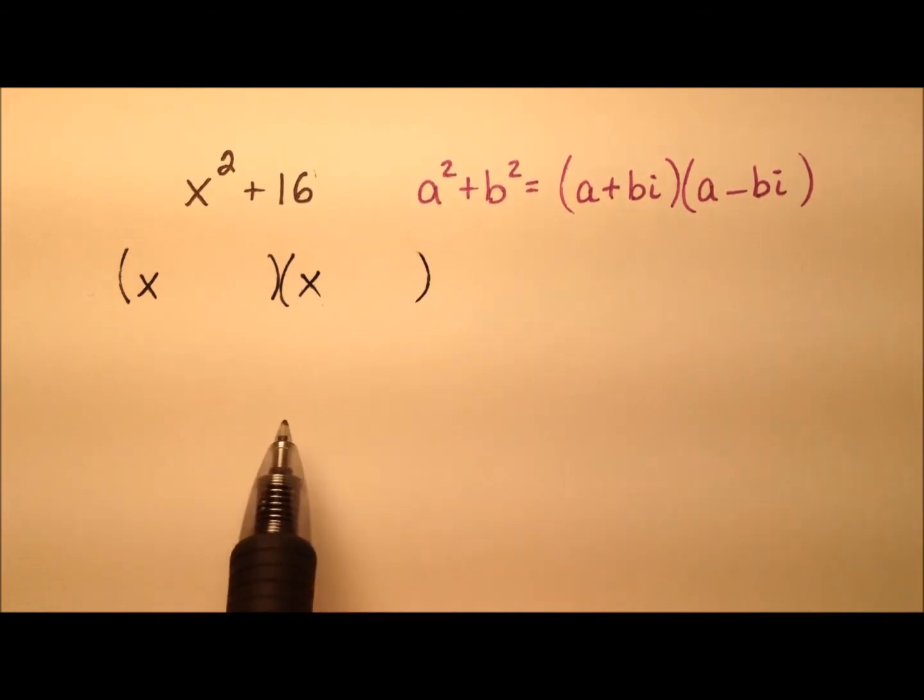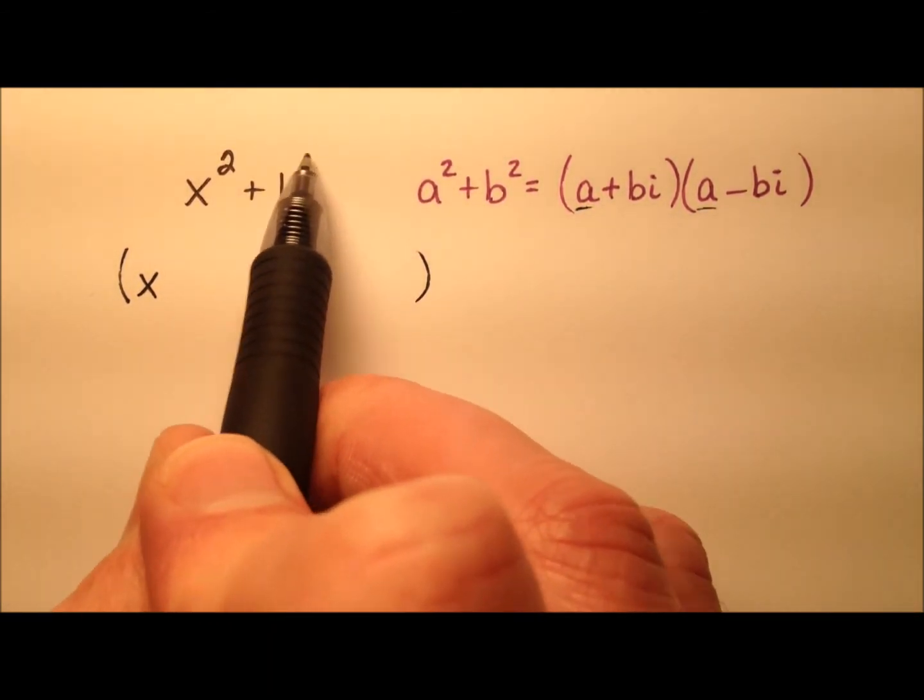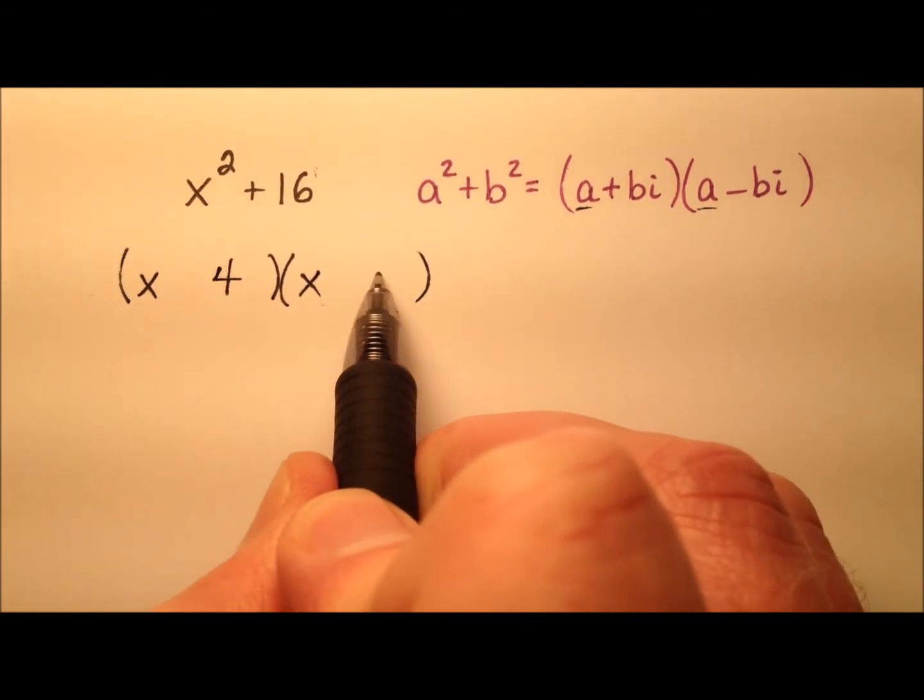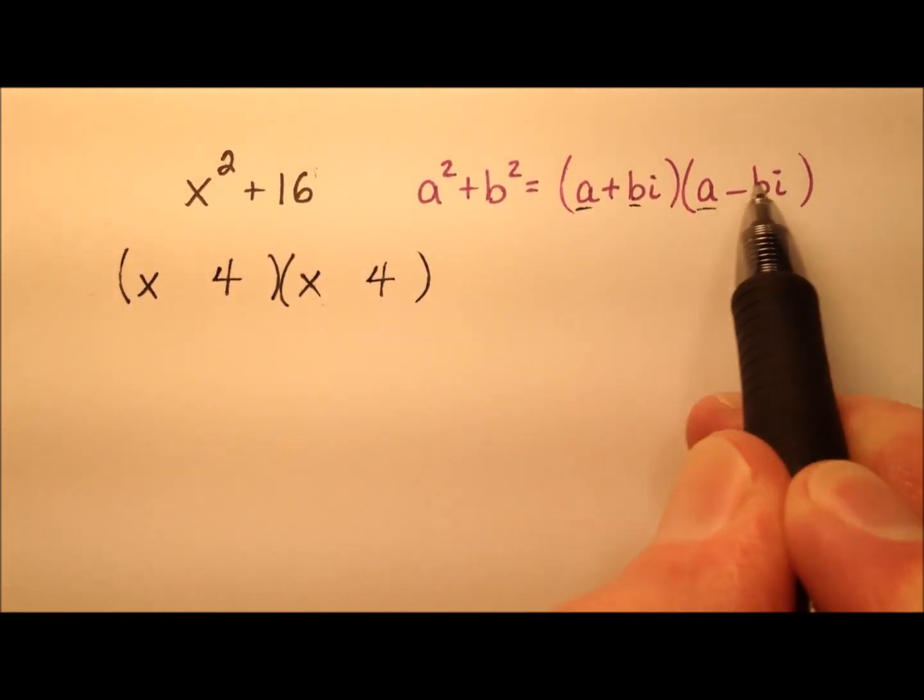And in my formula, that'll be my a, and then the square root of 16 will be 4, and from my formula, that'll be b.